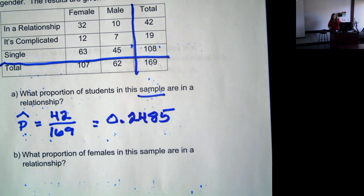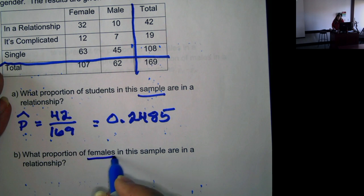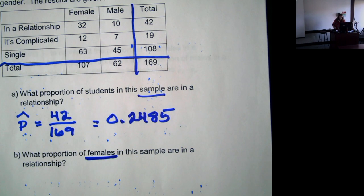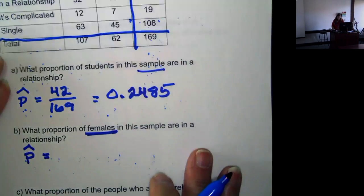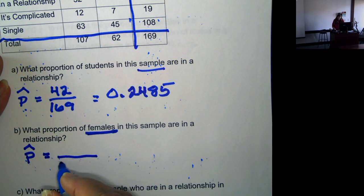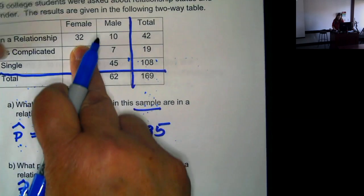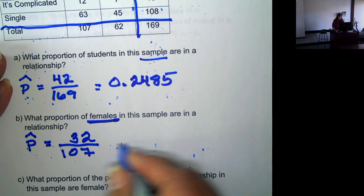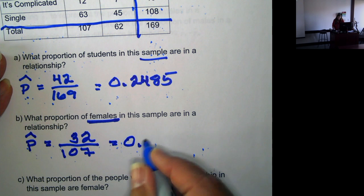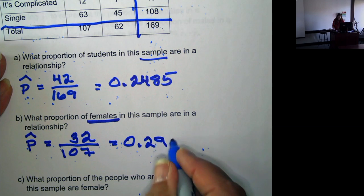Now we want what proportion of females are in a relationship. So now we're just working with the female students. So we have 107 female students, and of those 107, 32 say that they are in a relationship, which is 0.299.